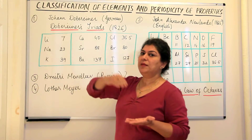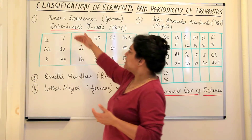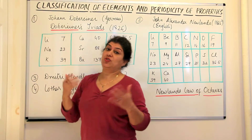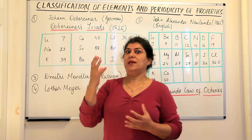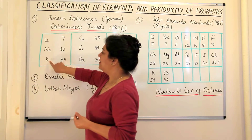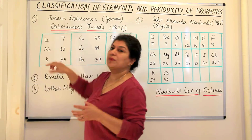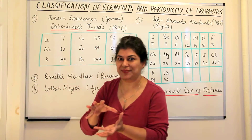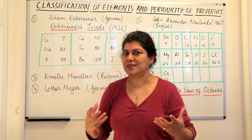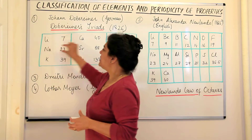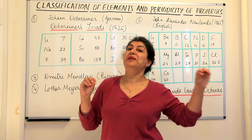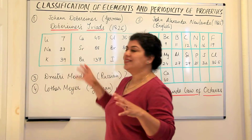Average would be in the middle. The gradation in properties was also seen — whatever property was shown by the first and third elements in extreme, sodium would have that in between. So in properties, in mass, in everything, the element in the middle was actually falling in the middle.